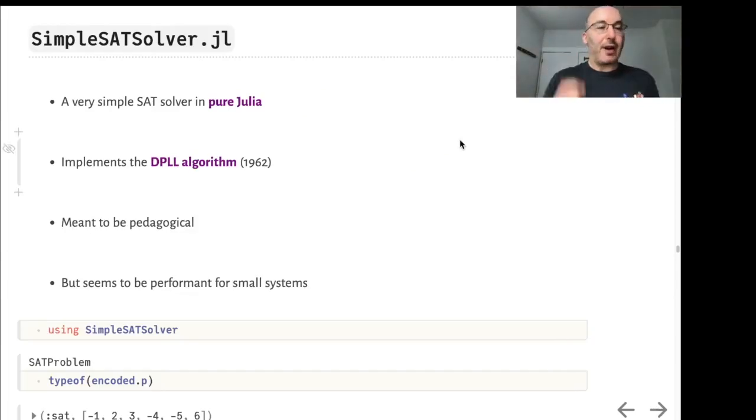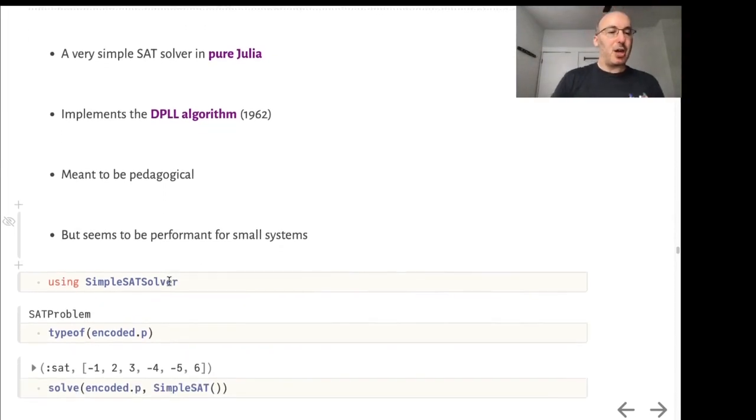SatisfiabilityInterface.jl currently uses the CryptoMiniSat5 solver by default but it's easy to add other solvers. I actually wrote a very simple SAT solver in pure Julia which implements the DPLL algorithm from 1962. It's meant to be pedagogical and be a basis for making a more complete solver, but it seems to be performant for small systems which should not surprise anybody who's used Julia. Julia should be an excellent language to write such solvers in. Here's an example: you just do using SimpleSat solver and when you have a SAT problem type object you can just solve it using SimpleSat using type-based dispatch.